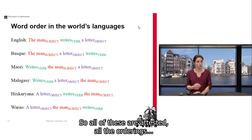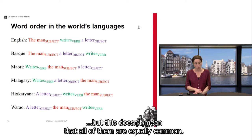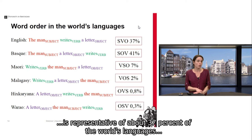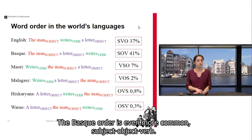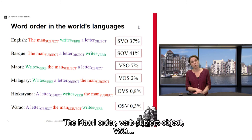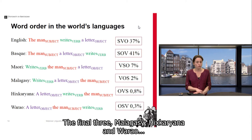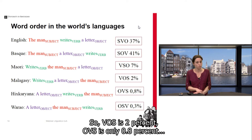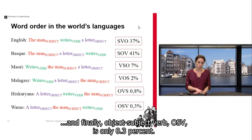All six orderings are attested, but this doesn't mean they are equally common. The English order SVO is representative of about 37% of the world's languages. The Basque order SOV is even more common at 41%. The Maori order VSO is less common at 7%, but still not quite rare. The final three — Malagasy VOS at 2%, Hixkaryana OVS at only 0.8%, and Warao OSV at only 0.3% — are all increasingly rare. So there are very marked differences here.